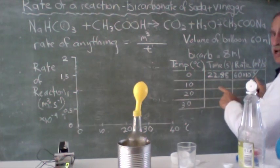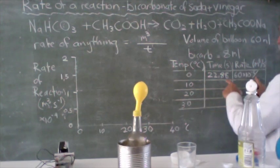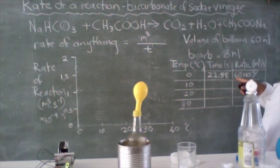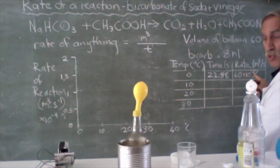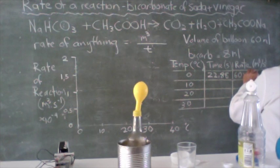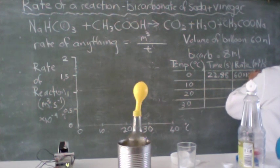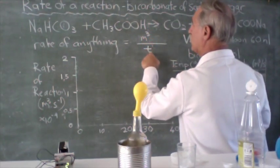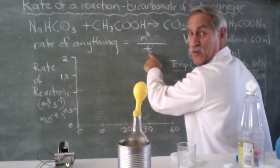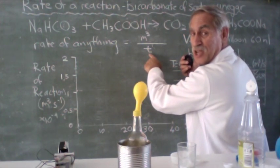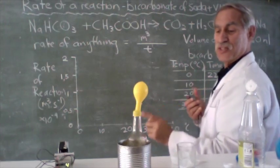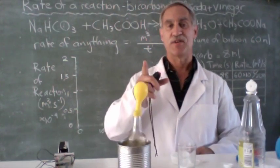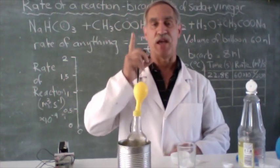And we will work out the rate of this reaction by dividing the volume of air produced, 60 times 10 to the minus 6 meters cubed divided by 22.88. So our rate of the reaction is how much gas is produced over the time. And we've just measured the time for the reaction. And now we're going to repeat the same experiment at 10 degrees, 20 degrees, and 30 degrees.